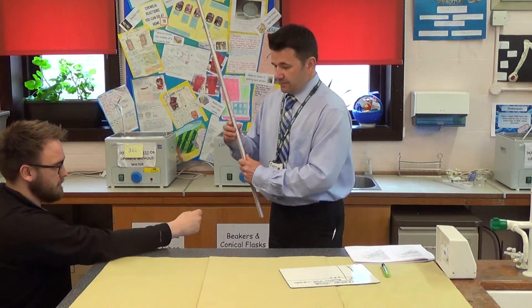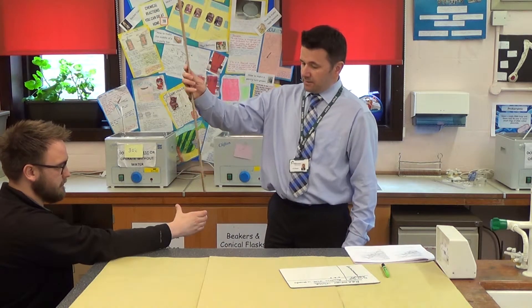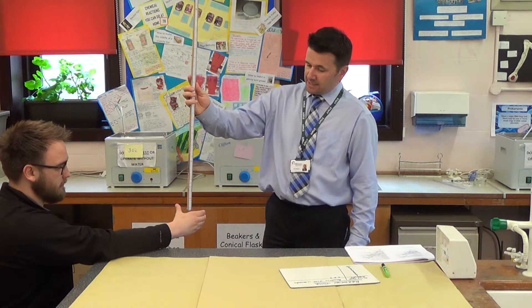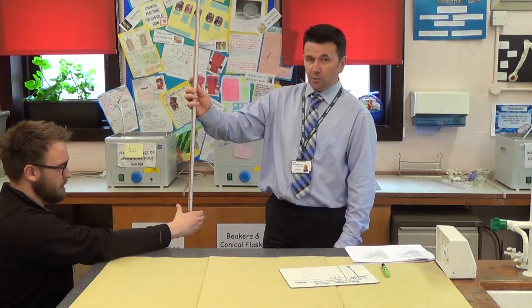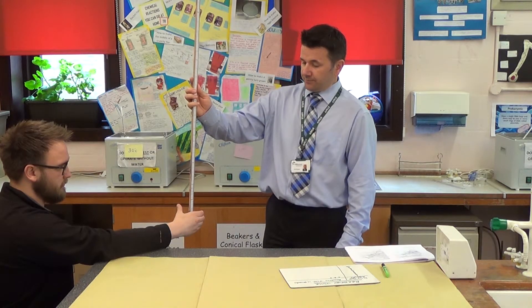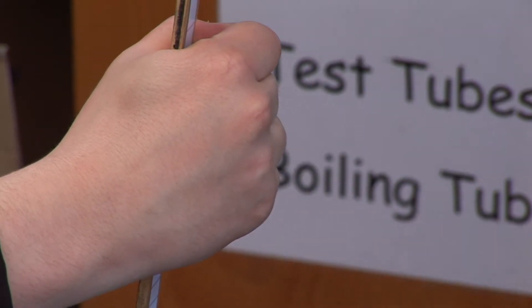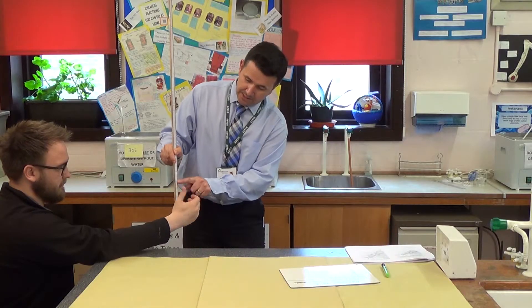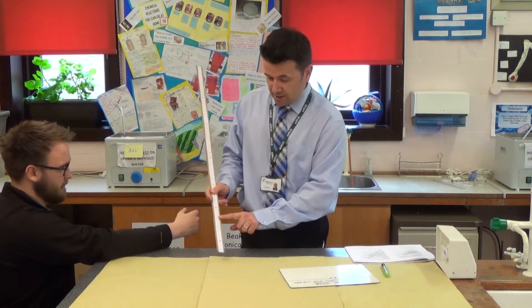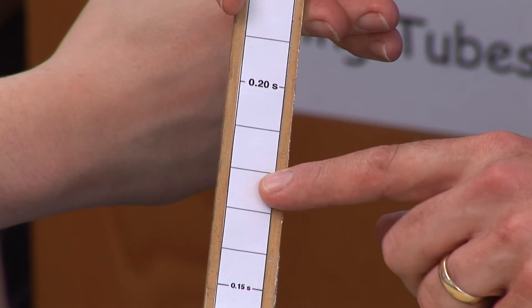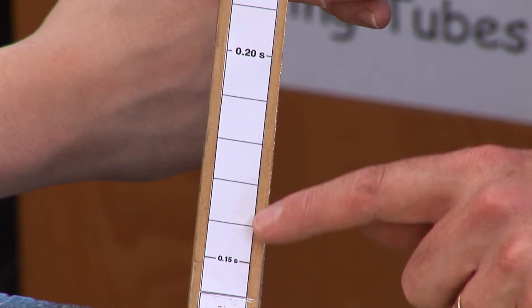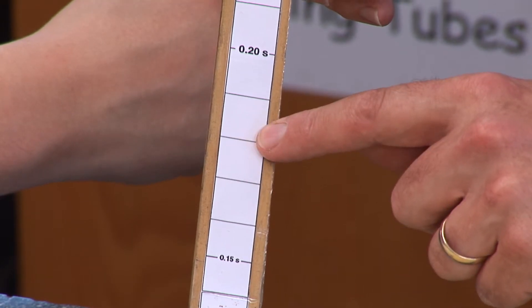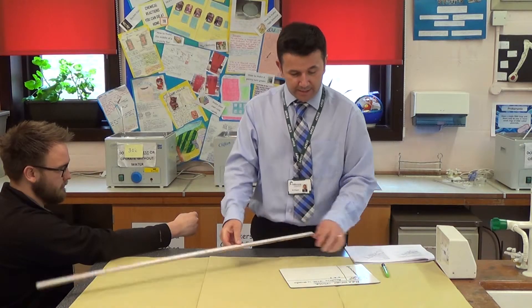We'll do it again. Make sure it's at about zero — it has to not be touching; make sure the ruler doesn't touch, because the person will know when you dropped it. This time he's got a faster reaction time — 0.18 seconds, because there's 0.15, 0.16, 0.17, 0.18 seconds.